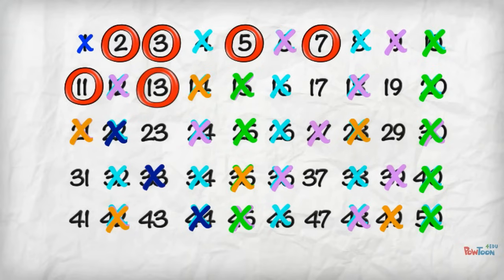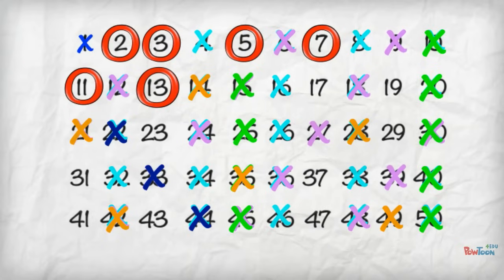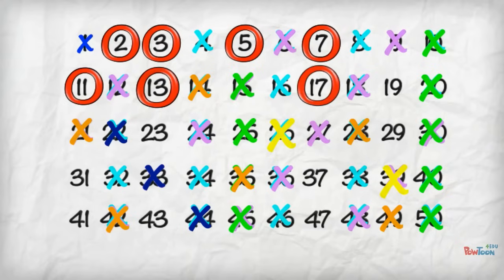13 is the next prime number. Get rid of the multiples. 26, 39. Now we're on to... Sieve out the multiple. Two seventeens, 34.